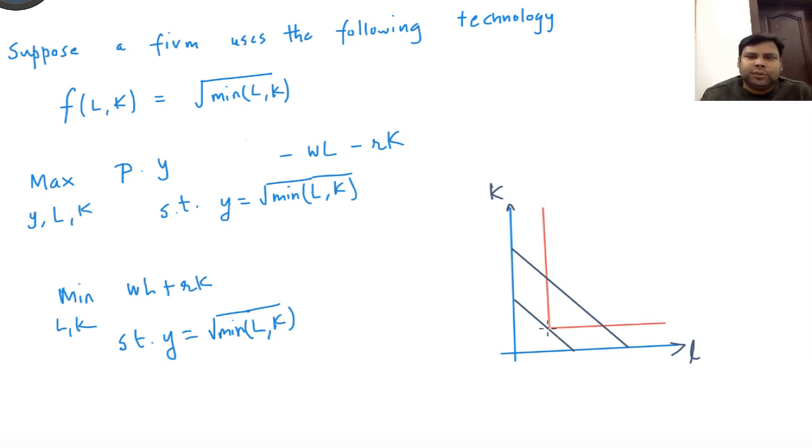What is this point? This is the isoquant corresponding to y level of output, so L must be y squared and K must be y squared.